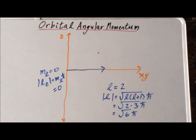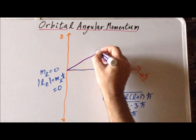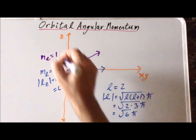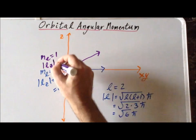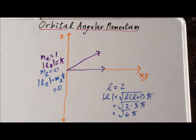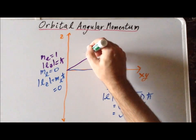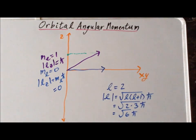A second possible orientation of this vector corresponds to an m sub l value equal to positive 1. So in this case, the magnitude of the z-component of the angular momentum is equal to h-bar. We can highlight the fact that this is the projection onto the z-axis by putting a little dotted line, to show this corresponds to m sub l equals 1, or the magnitude of the z-component being equal to h-bar.